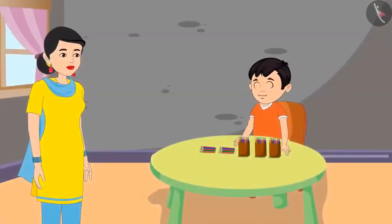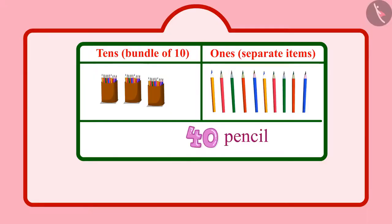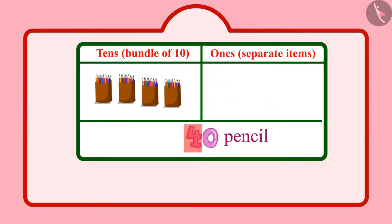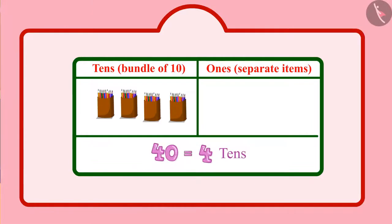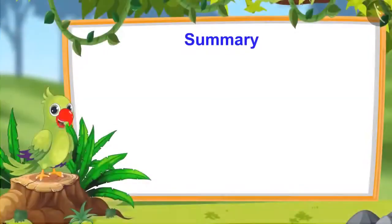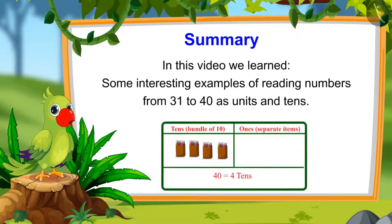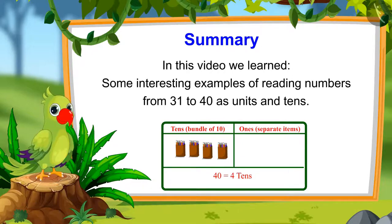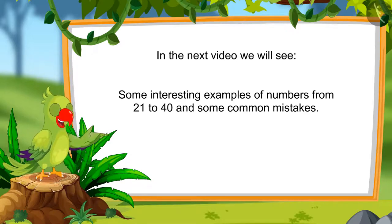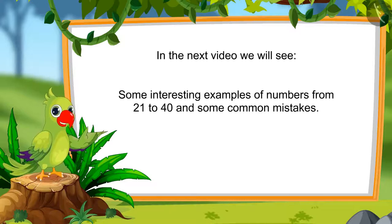Yes Chotu, you are right. How many tenths do you have now? Mummy, 40 pencils meaning I have 4 tenths. And units? Mummy, there are no units in 40. Yes Chotu, there are only 4 tenths in 40 and 0 units. So children, that was all for today. In this video, we saw numbers from 21 to 40 and interesting examples of reading those numbers as units and tens. In the next video, we will see more interesting examples and learn about common mistakes. Goodbye friends.